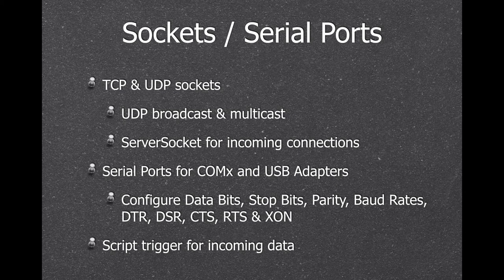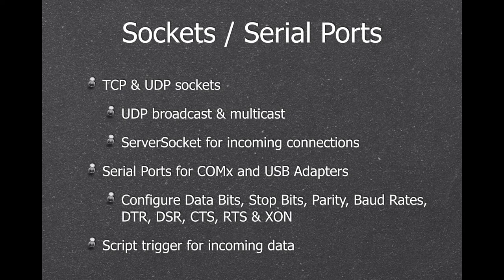The MBS plugin has functions for sockets and serial ports. We can create TCP and UDP sockets and connect to devices. We also allow you to use UDP broadcasts so you can send a message to all devices on the local network. The server socket functions allow you to listen for incoming connections and react to them. You can use serial ports in FileMaker with either the local COM ports on the machine or using USB adapters. You can configure all the connection settings and then transfer data to and from your COM devices — very handy for various scales or external measurement devices. For both serial ports and sockets, you can get a script trigger for incoming data so you can react when new data is available.